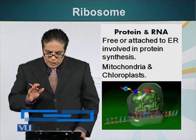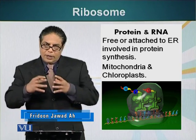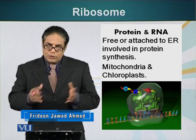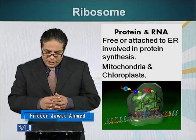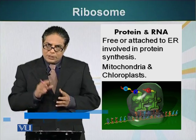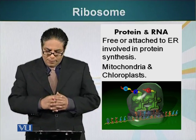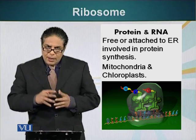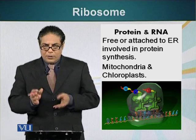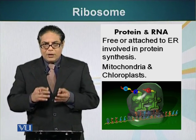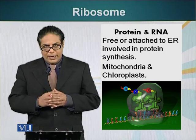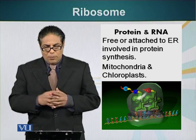Ribosomes can be free or attached to the endoplasmic reticulum. We saw in the animation that there were ribosomes attaching themselves to the endoplasmic reticulum. Ribosomes are also found in the mitochondria and chloroplasts, which are other types of cell organelles we will talk about later.